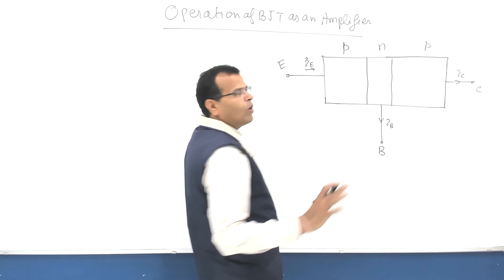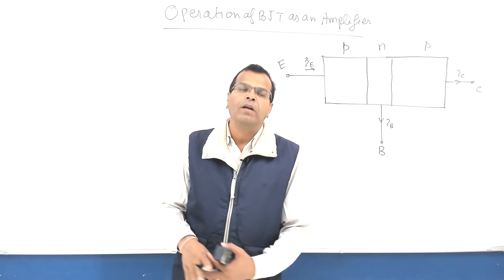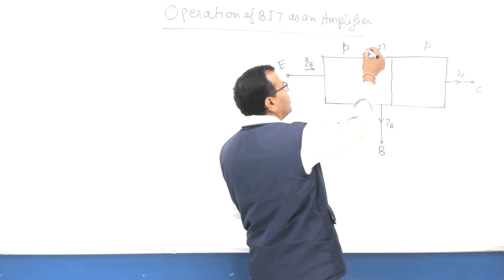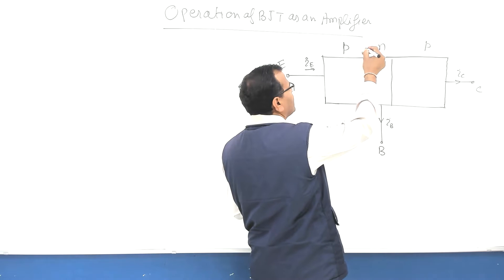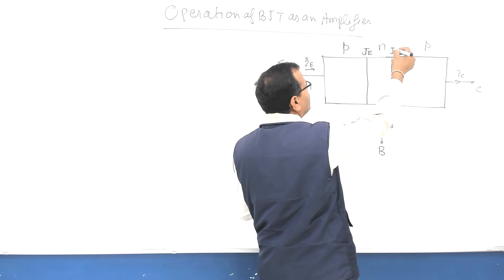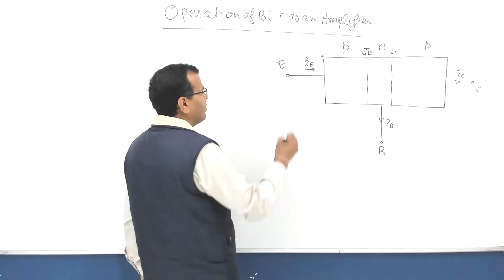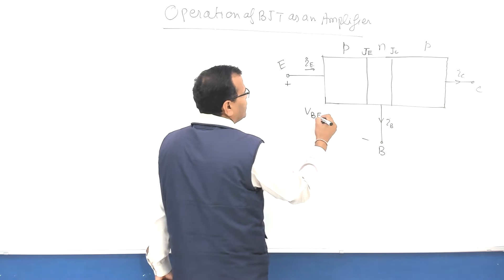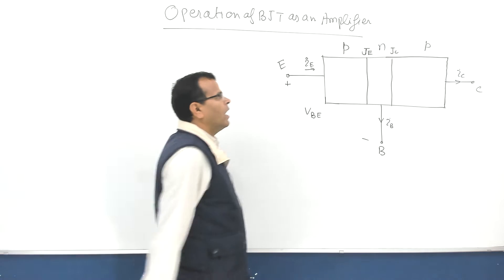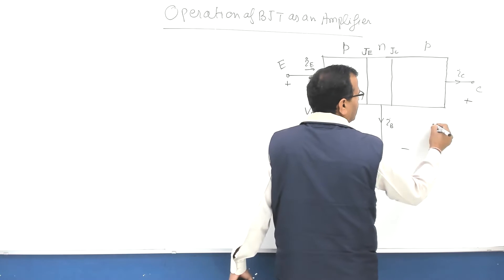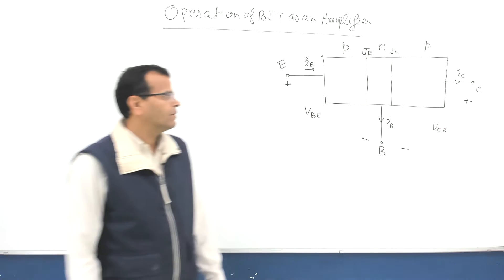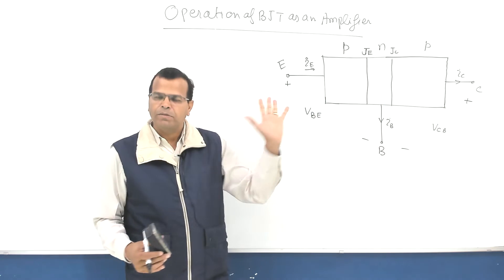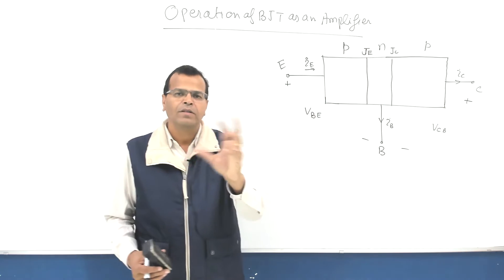In normal mode of operation as an amplifier, you should remember: when BJT is operated as an amplifier, the emitter junction is forward biased and the collector junction is reverse biased. If you connect and forward bias by this voltage, and this is reverse biased with voltage VCB — that is how it happens. So collector junction is reverse biased by this voltage, and emitter junction is forward biased by this voltage.